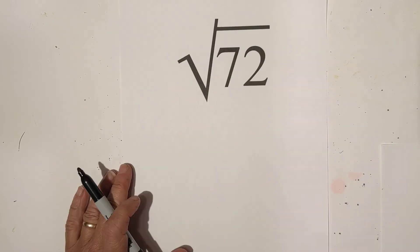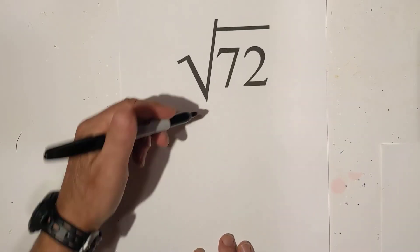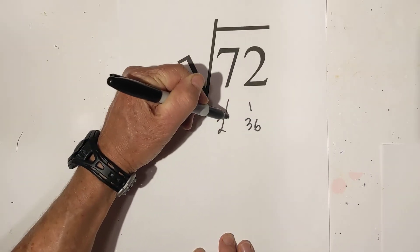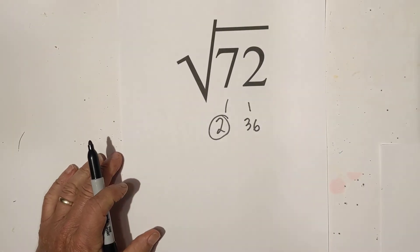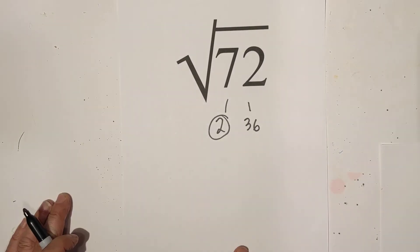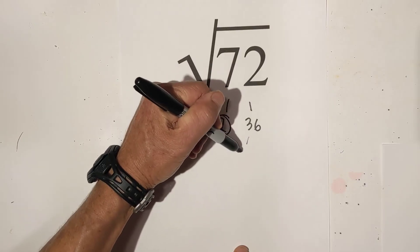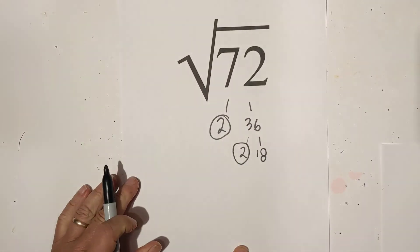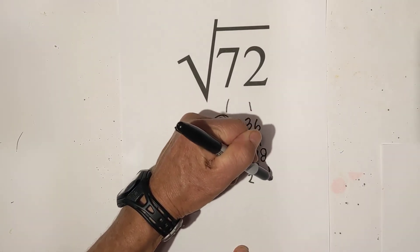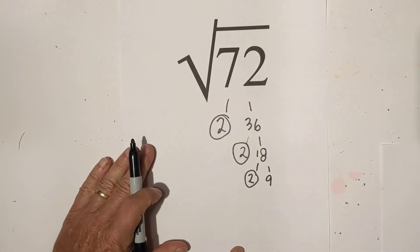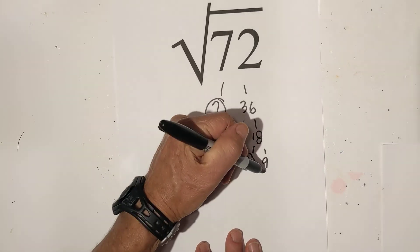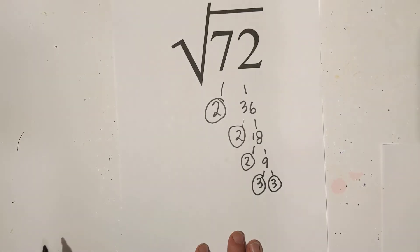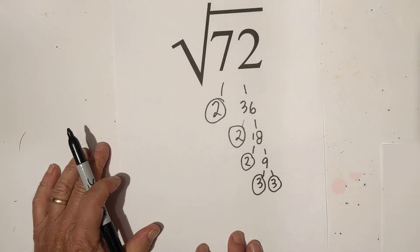Let's try another. Let's try seventy two. You know the technique. We go two times thirty six. Circle the two because it is prime. Now let's try two times eighteen. We have another prime number two. I'll circle it. Two times nine. Circle the two. I may run out of room. Then we have three times three. And we have accomplished our goal of being down to all prime numbers.